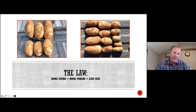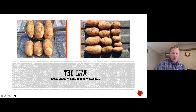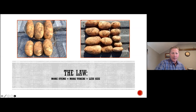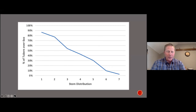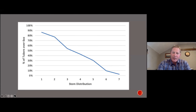The idea is the bigger the spud, the higher the level of recovery — big, blocky, nice tubers. But how does this translate into the framework that we have to manage under? As we've looked at this over the years, it became very evident that as stem number increases along the bottom axis, size also decreases. And with that comes some serious challenges.